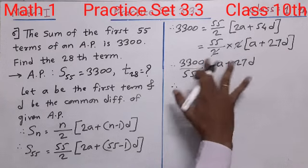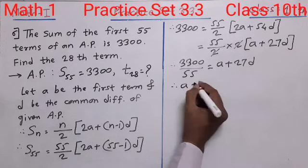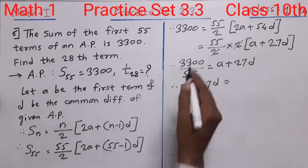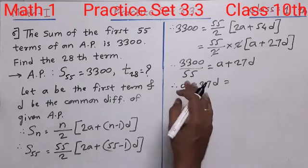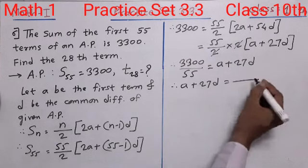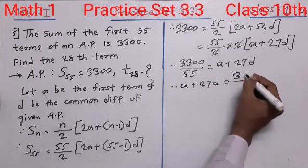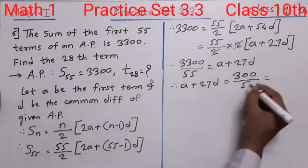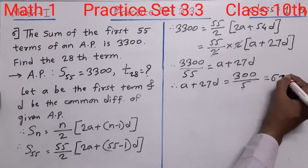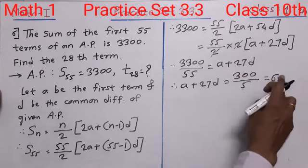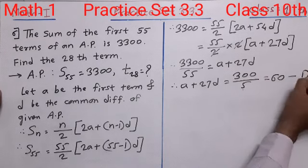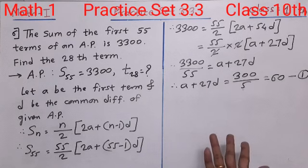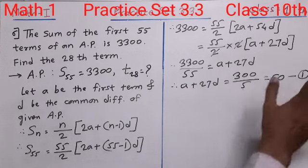So A plus 27D equals 60. Give this as equation number 1, because you cannot solve it further without knowing the individual values of A and D. So we stop here and call it equation number 1.